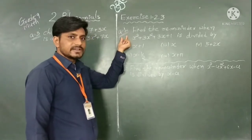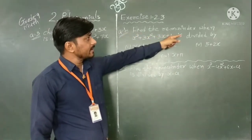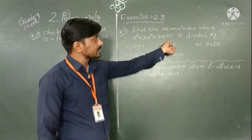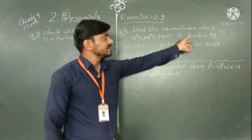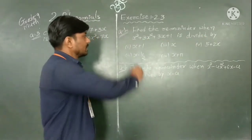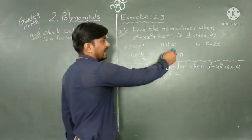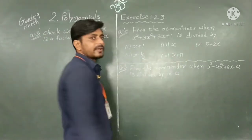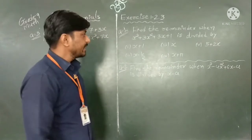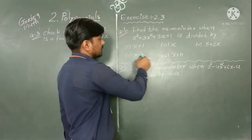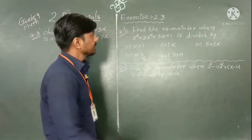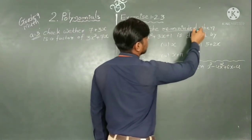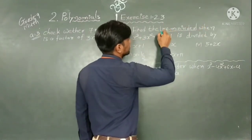What is our first question? Find the remainder where x cubed plus 3x squared plus 3x plus 1 is divided by x plus 1, x, 5 plus 2x, x minus one-half, and x plus 5. We have 5 sub-parts. Find the remainder — this is most important.